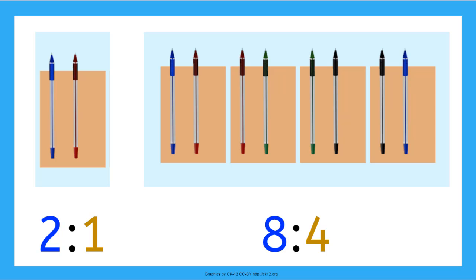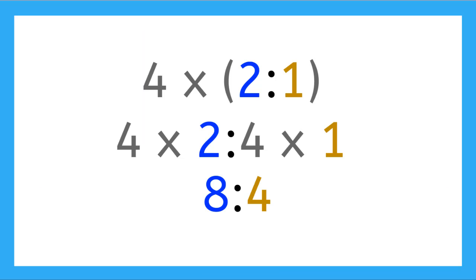We can write their ratios out as two pens to one box, 2 to 1, is equivalent to eight pens to four boxes, 8 to 4. You can find an equivalent ratio by multiplying or dividing both sides of the ratio by the same number. In this case, we multiply both sides of the 2 to 1 ratio by 4 and we get 8 to 4.